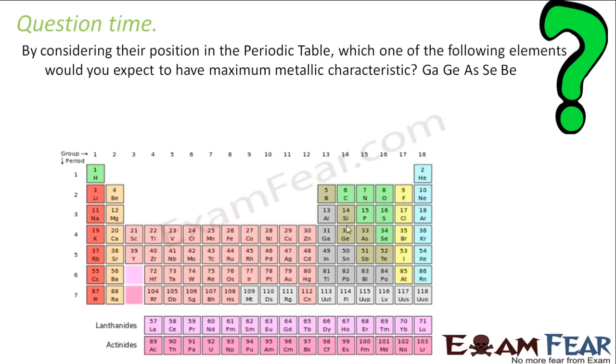By considering their position in the period table, which of the following elements we expect have maximum metallic character. So I have Ga, Ge, As, Se, Be, and Br. We know that the non-metallic character increases as we go from here to here. So this will be the maximum non-metallic. Because the non-metallic character increases as we go from left to right in the periodic table.